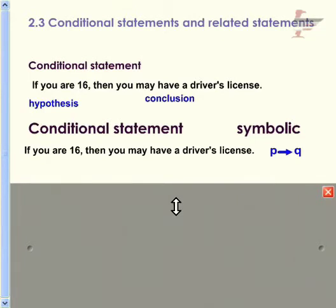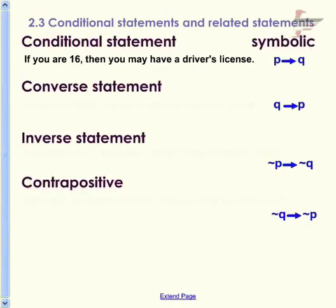statements symbolically as well: if P then Q, where P is the hypothesis and Q is the conclusion. If P then Q. The logic symbol for if-then is this arrow symbol. Now, there are a whole bunch of statements